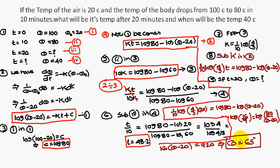This is the way to find out the theta value when t equal to 20 — theta equals 65 degrees. Similarly, for theta equal to 40 degrees, we found that the time is 48.2 minutes. This is about Newton's law of cooling.